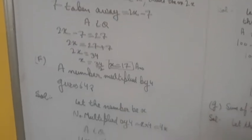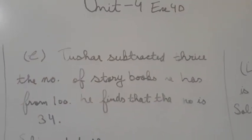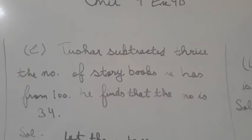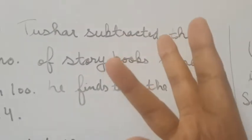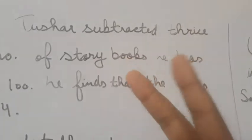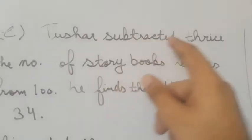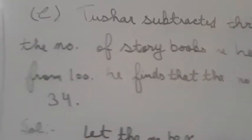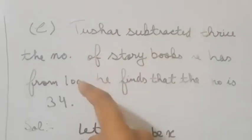Now let's move to part E/F. The problem states: 'subtracted thrice the number of story books he has from 100'. Remember: the digit that comes after 'from' always comes first in the subtraction expression.